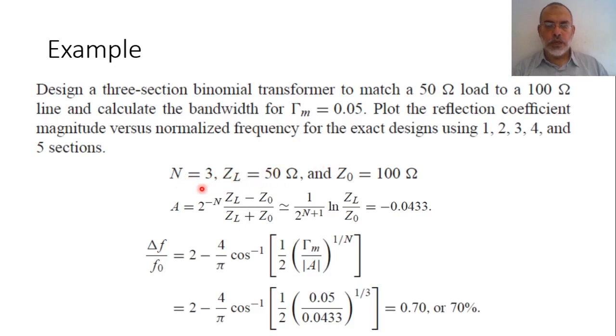In this case, the number of sections is three, ZL is 50 ohm and Z0 is 100 ohm. From these inputs we can obtain the amplitude coefficient A equals 2 to the power minus N times ZL minus Z0 over ZL plus Z0, which can be approximated as 1 over 2 to the power N plus 1 times ln ZL over Z0. By taking ZL as 50 and Z0 as 100 ohm, we can obtain the amplitude A as minus 0.0433.